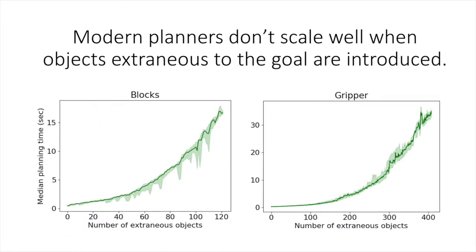Unfortunately, modern planners do not scale well to this regime where we have many contextually extraneous objects. These graphs show the performance of FastDownward, a widely used classical planner, on two popular planning domains when a number of extraneous objects have been added to the state. We can see that the performance gets substantially worse as the number of such objects increases.